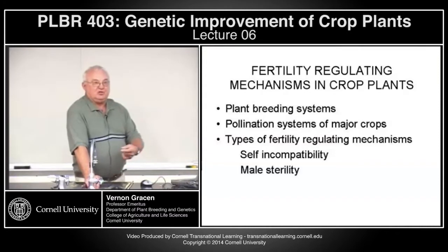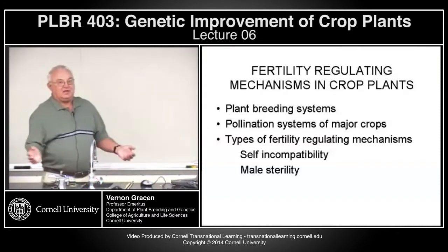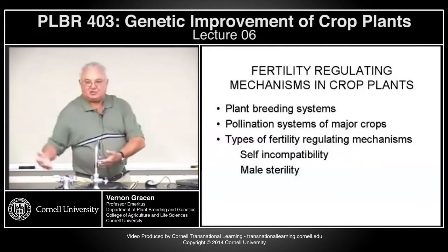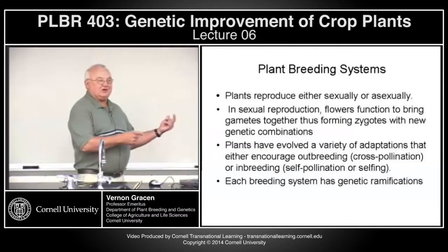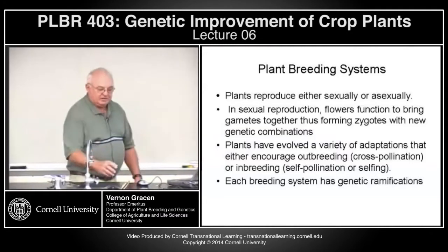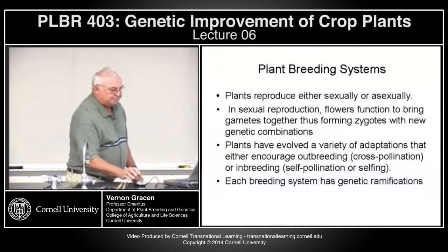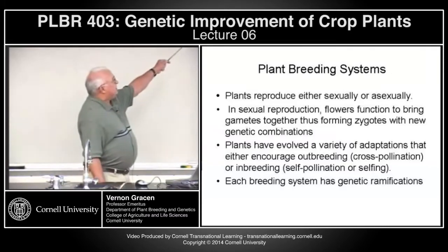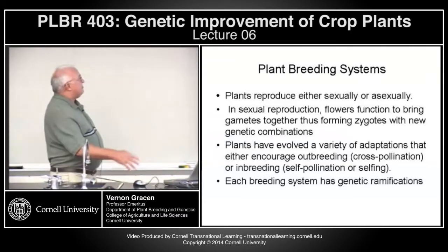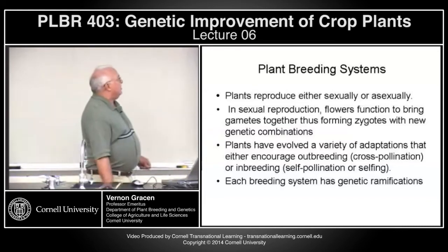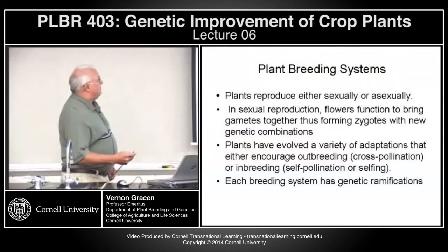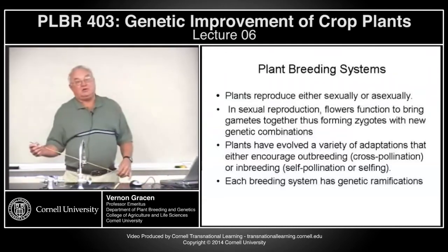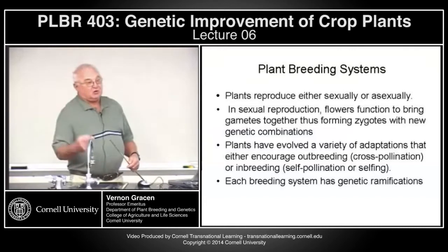Each of those genetic systems has lots of ramifications, not only for how plants evolved through natural selection, but also how their evolution is guided through plant breeding programs. The two major breeding systems are outbreeding — reproduction between different individuals or cross-pollination, involving at least two plants — and inbreeding — self-pollination within a single plant.